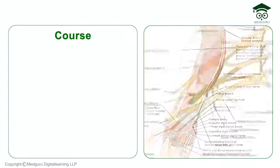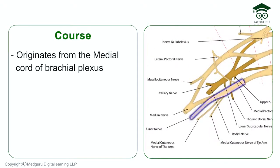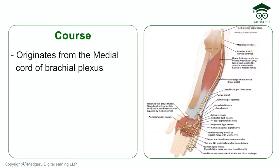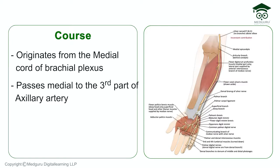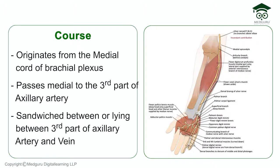Coming to the course of the ulnar nerve: as it originates from the medial cord of the brachial plexus in the axilla, it passes downward medial to the third part of the axillary artery. In the axillary region, the ulnar nerve is sandwiched between the third part of the axillary artery and the axillary vein.